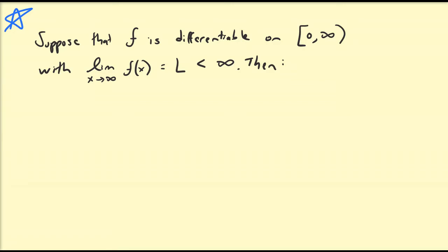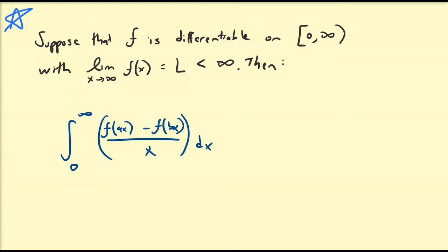Hello there. In this video we're going to discuss a special type of functions for which a particular structure of integrals — namely definite integrals and improper integrals — can be applied. We're going to first assume that f is a differentiable function on the right-hand side of the real line, and that the limit as x approaches infinity of the function is a finite number, for example e to the minus x. Then the integral from 0 to infinity of f(ax) minus f(bx) all divided by x dx is equal to L minus f(0) multiplied by the natural log of a divided by b, where a and b are non-zero, ideally positive, real numbers. We're going to prove this theorem, which is sometimes referred to as Frullani integrals.